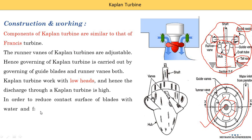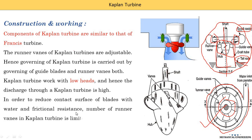In order to reduce the contact surface of the blade with water and frictional resistance, the number of runner vanes in Kaplan turbine is limited to 3 to 8. This means there are fewer vanes compared to the Francis turbine, giving it a low friction coefficient. If you want to watch videos on Pelton turbine or Francis turbine, go to the playlist — in the description there are various links available. You can easily understand the different types of turbines; the video on the difference between Francis and Kaplan turbines is already available.